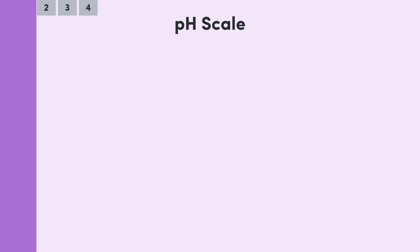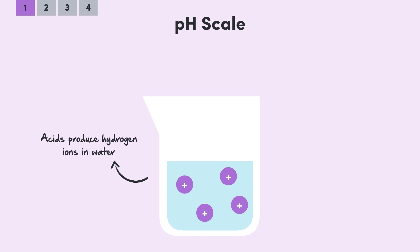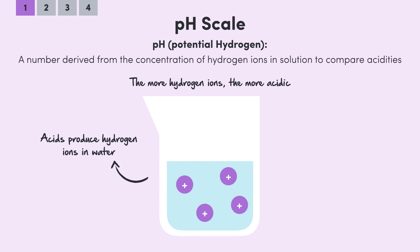Using the pH scale to measure acidity comes back to the fact that acids produce hydrogen ions in water, and it's these hydrogen ions that give them their properties. So based on this fact, it makes sense that we want a scale which follows the rule, the more hydrogen ions, the more acidic. pH stands for potential hydrogen, and it quite literally just takes the concentration of hydrogen ions in a solution and spits out a number that we can use to compare acidity.